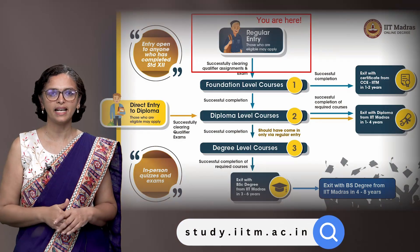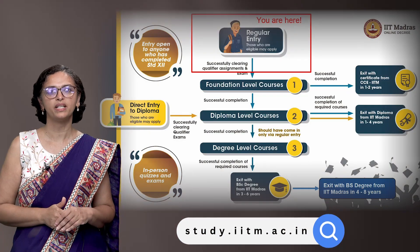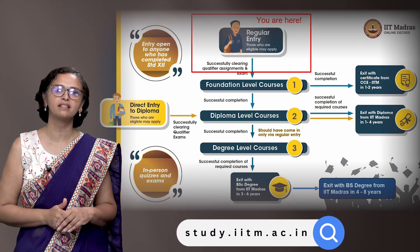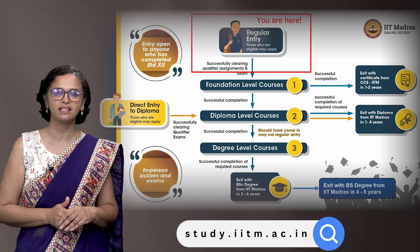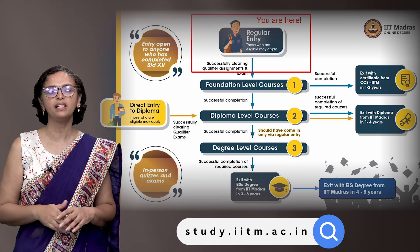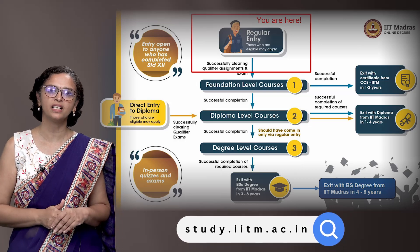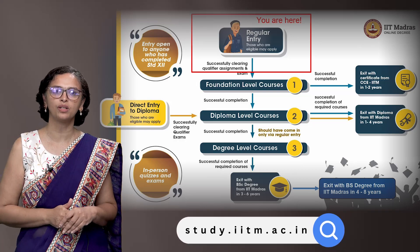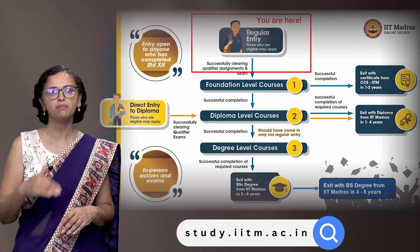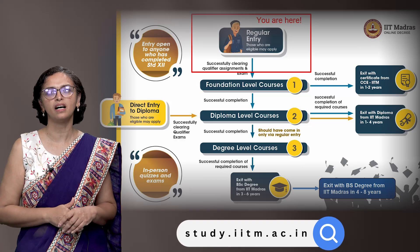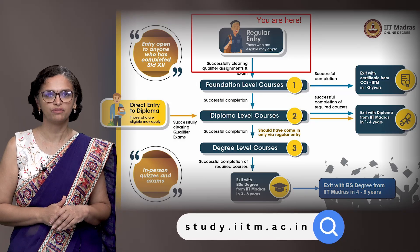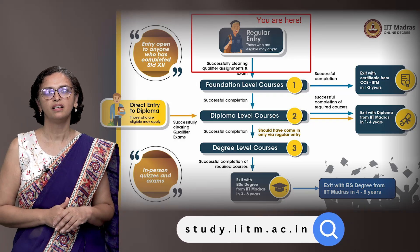You can see other exits as well: at the end of the foundation level there is a certificate exit, and at the end of the diploma level you can exit with one or both diplomas. There is also a BSc exit after three years and a BS exit at the end of four years.